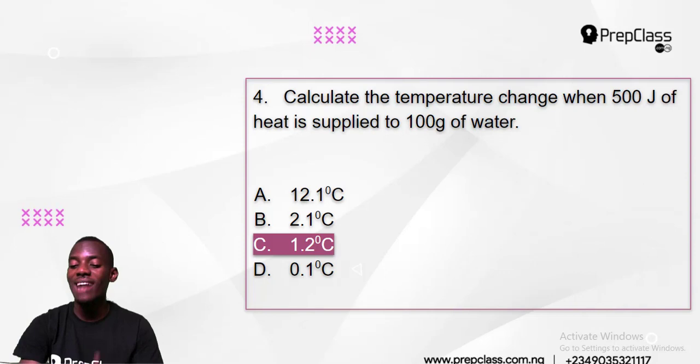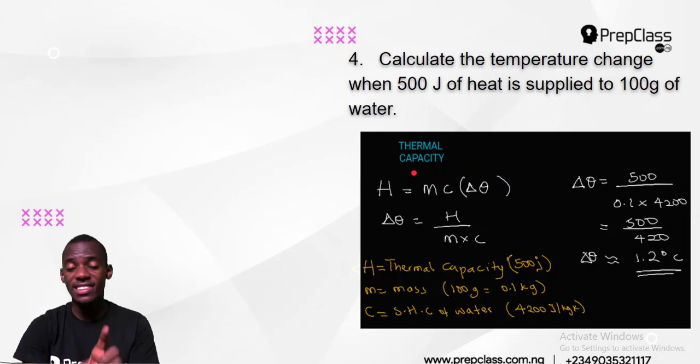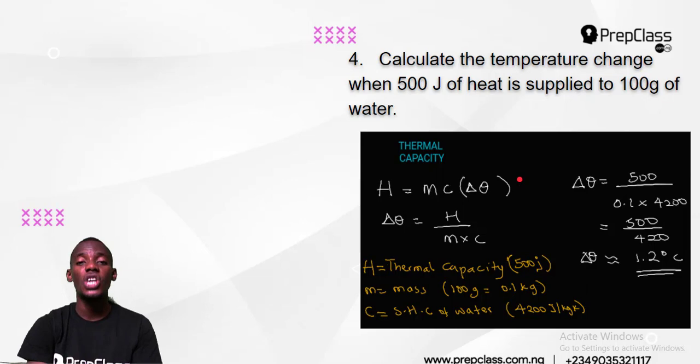And that is the answer. Don't forget the formula — very important. Any question on thermal capacity or heat in physics can be handled by this formula: H equals MC change in theta.